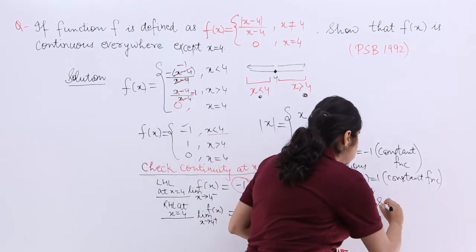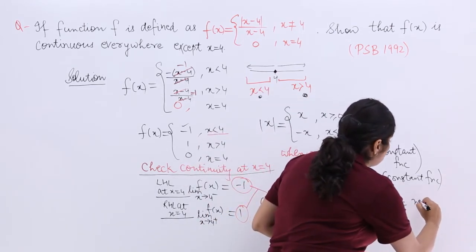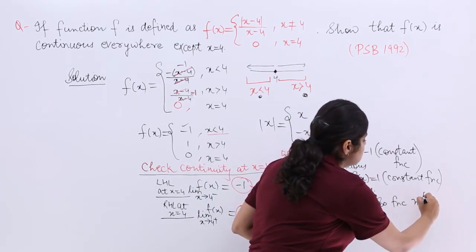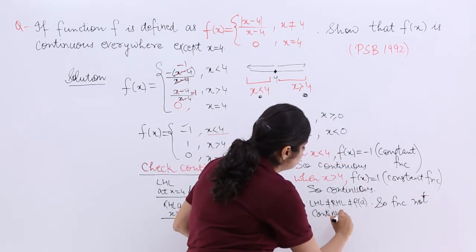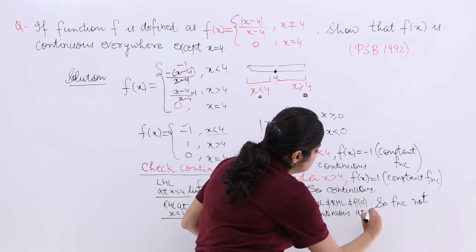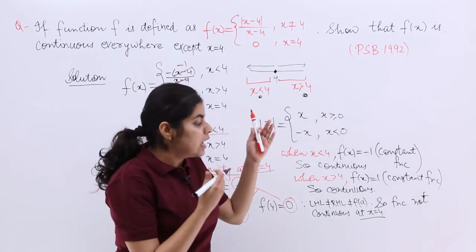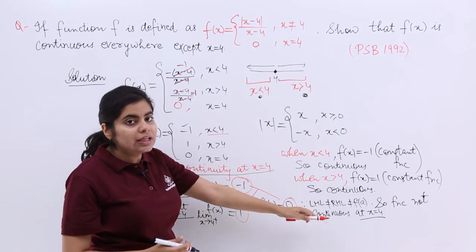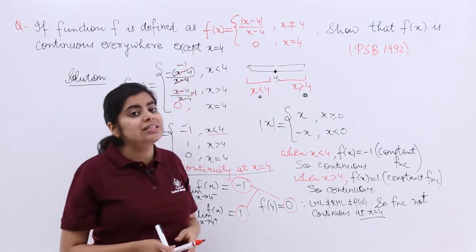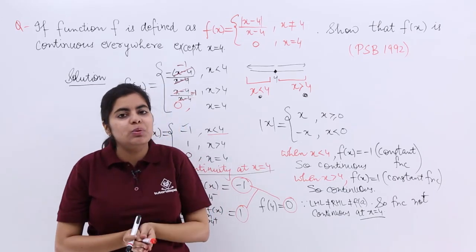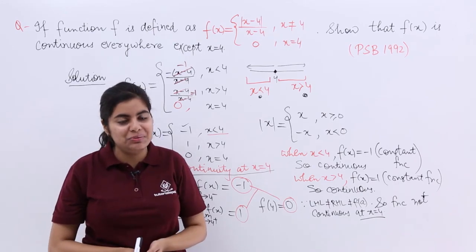Since the left hand limit, right hand limit, and the value of the function are not equal, the function is not continuous at x equal to 4. Otherwise, everywhere it is continuous. Hence the function is continuous everywhere except at x equal to 4. Thank you.